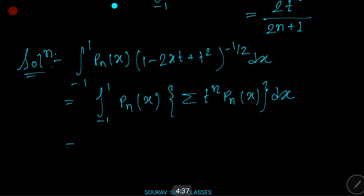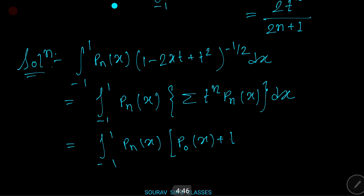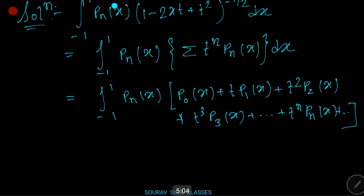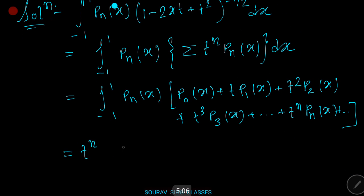That equals integration from minus one to plus one of Pn(x) times [P0(x) plus t times P1(x) plus t squared times P2(x) plus t cubed times P3(x) plus dot dot dot plus t to the power n times Pn(x) plus dot dot dot] dx. This gives t to the power n times integration from minus one to plus one of Pn squared(x) dx.